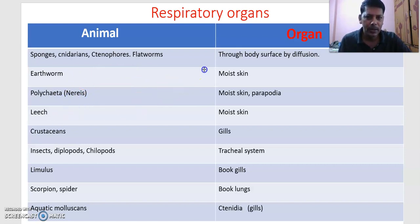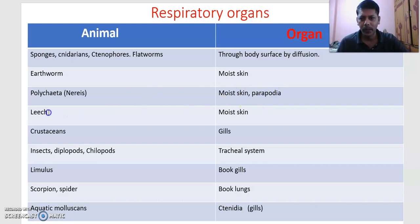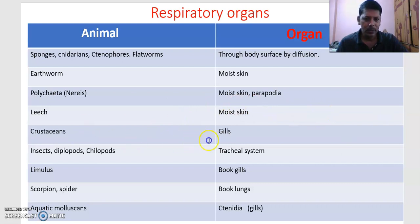In polychaetes, both the moist body surface and parapodia help in respiration (parapodia also help in locomotion). In leeches, respiration occurs through the moist skin. In crustaceans (class Crustacea, phylum Arthropoda), the respiratory organs are gills.